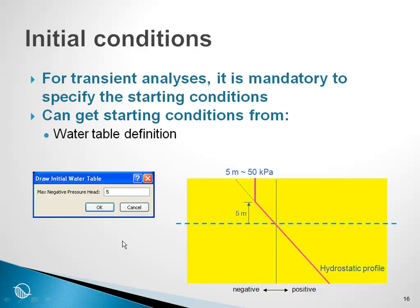There are many different ways in a SEEP/W analysis or in GeoStudio more generally to get the starting pore pressure conditions. We are going to highlight two procedures here, although there are more. One of the simplest is to define what we call a water table, where you as the user define the position of a water table.